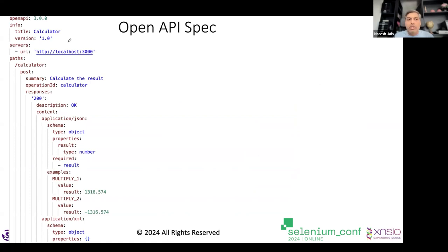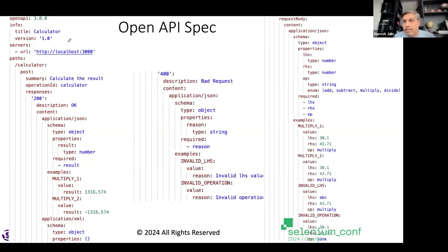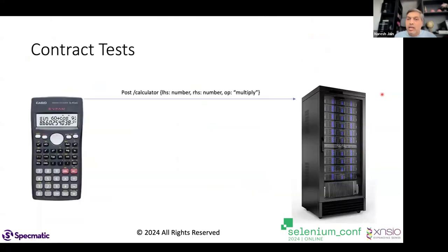In OpenAPI 3.0, I can define a path /calculator with a POST method that can return 200 or 400 responses. The request body has a left-hand side, right-hand side, and an operator — all three are required. The operator is an enum with only four possible values. This is a pretty decent contract capturing what the provider and consumer have agreed upon.